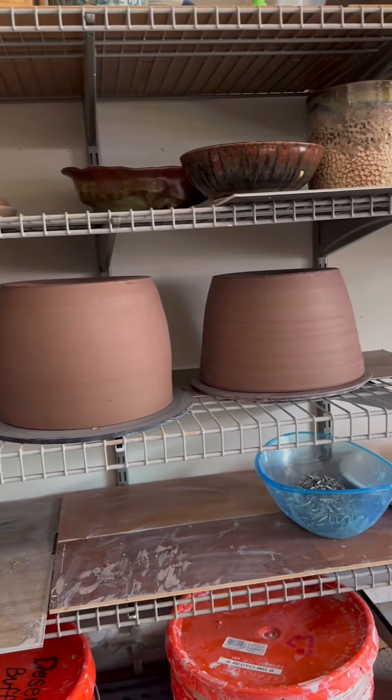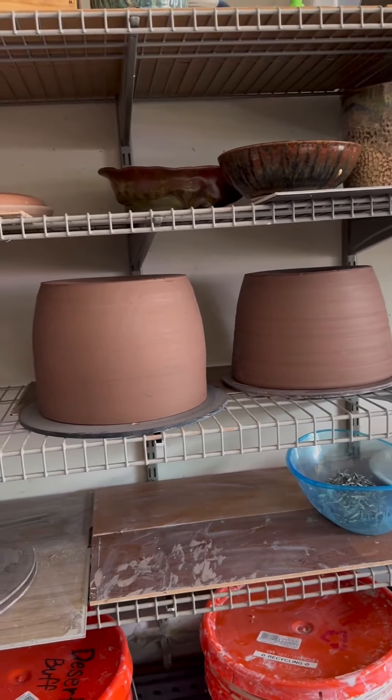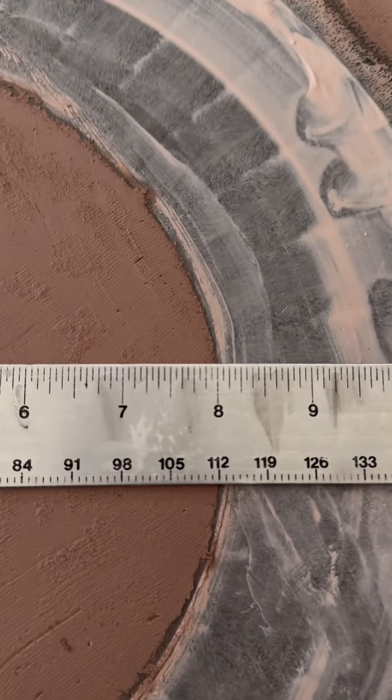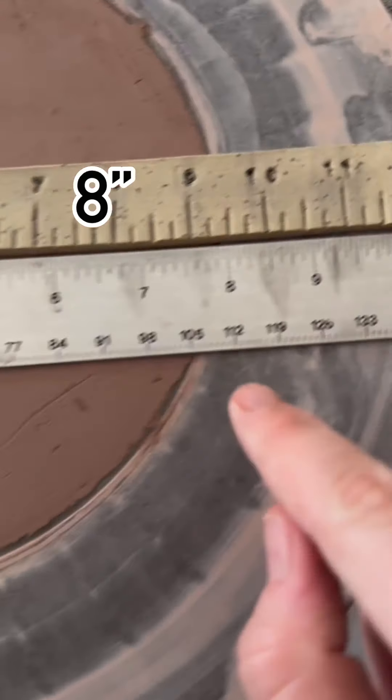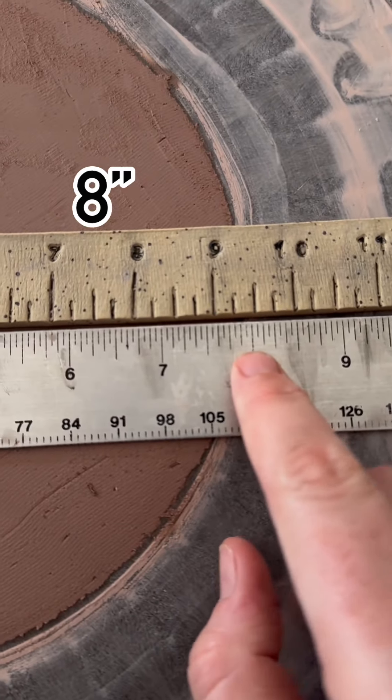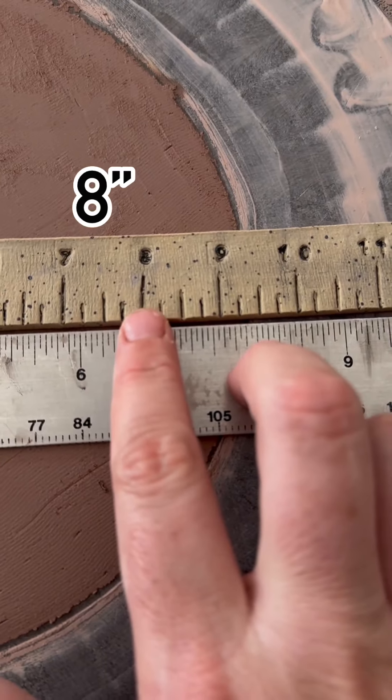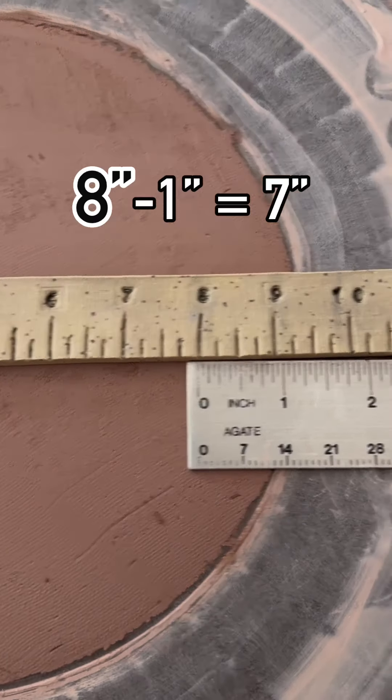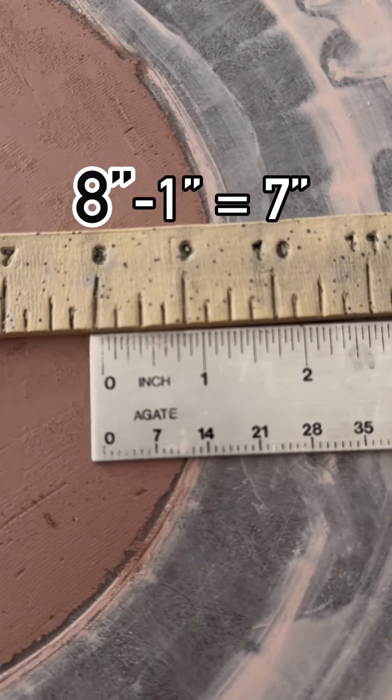So looking at these two large pots, let's figure out how much they're going to lose. When we take my normal ruler, the base of this pot measures close to eight inches wide. When you show the shrinkage ruler and you see where eight inches goes down to, the base of this pot is going to lose pretty much an inch.